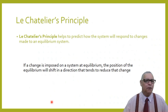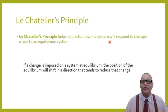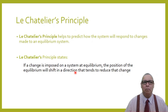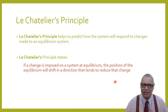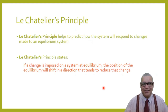Le Chatelier's principle helps predict how a system will respond to changes made to an equilibrium system. The principle states: if a change is imposed on a system at equilibrium, the position of the equilibrium will shift in a direction that tends to reduce the change. This is very important to remember.